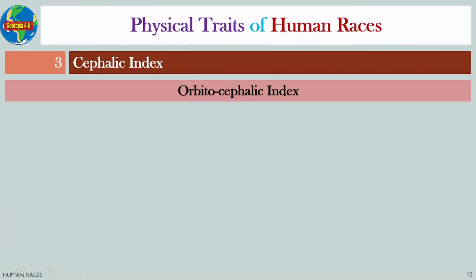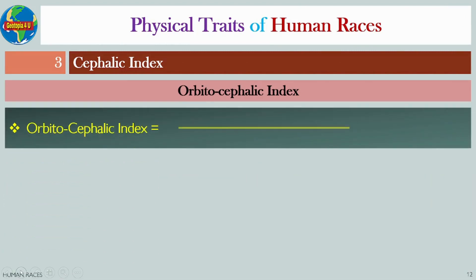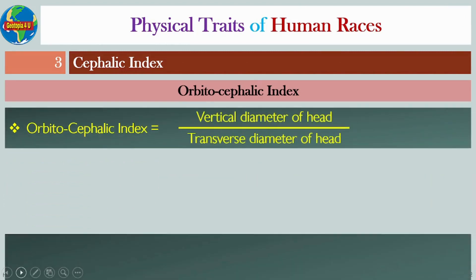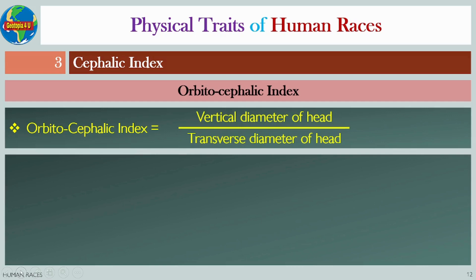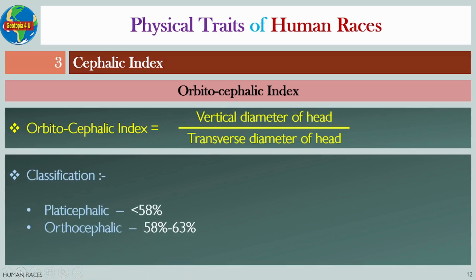There is another index known as the orbitocephalic index. The orbitocephalic index can be defined as the ratio between the vertical diameter of the head and the transverse diameter of the head. There are three types of orbitocephalic index.